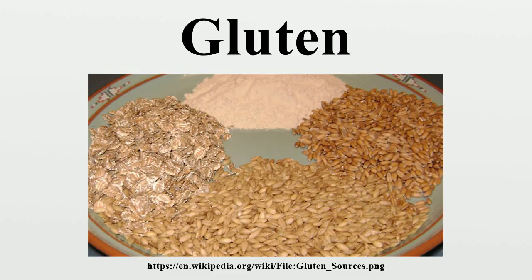Celiac disease is associated with some autoimmune diseases, such as diabetes mellitus type 1, thyroiditis, gluten ataxia, psoriasis, vitiligo, autoimmune hepatitis, dermatitis herpetiformis, primary sclerosing cholangitis, and more.